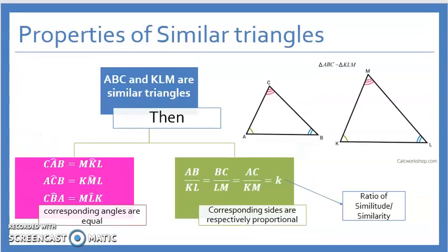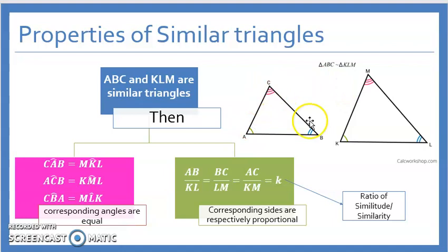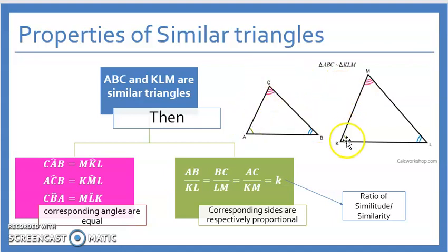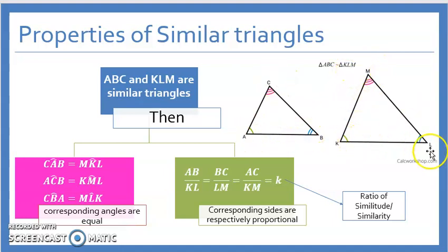So, definition and properties of similar triangles. If you have these two triangles which are similar — ABC and KML are similar triangles — then all the angles are equal. So ACB equals KML, CAB equals MKL, and CBA equals MLK. Corresponding angles are equal.